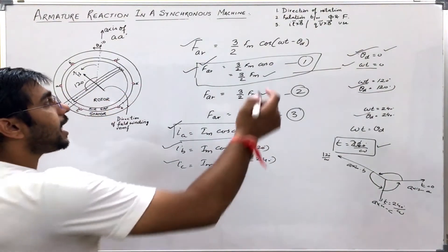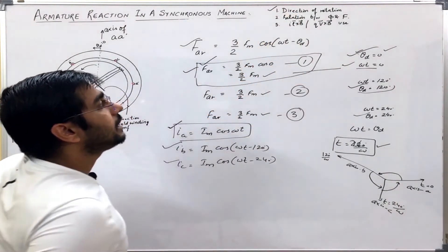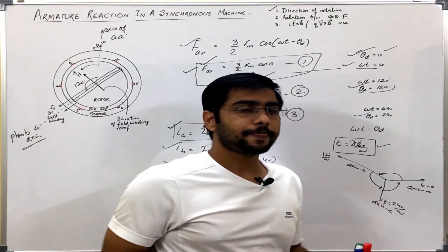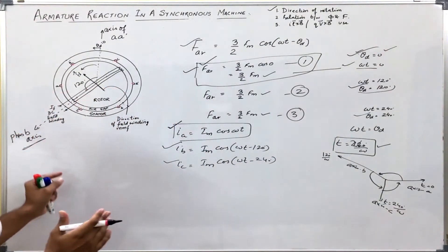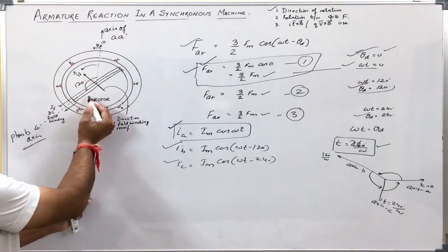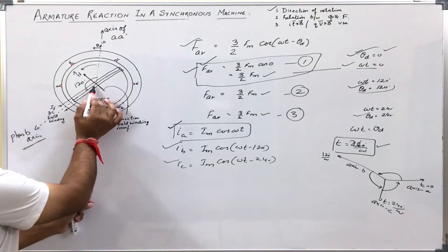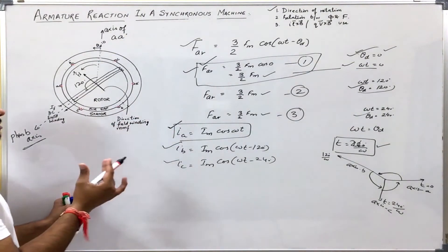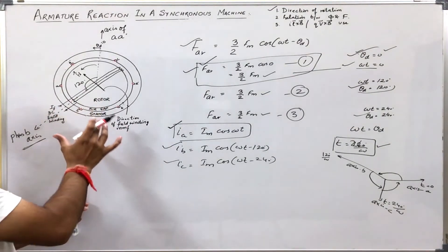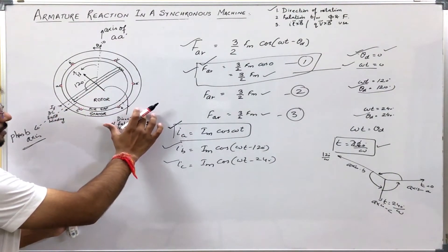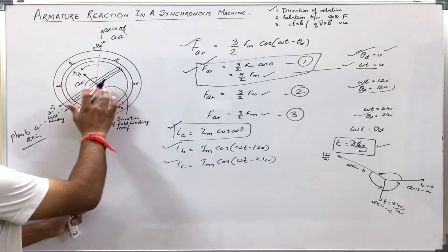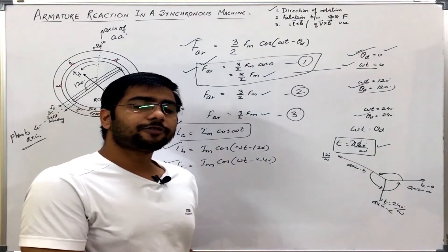In this way I have cleared this doubt about the direction of rotation of the MMF. Now there is one more thing. In this diagram I have shown that the axis of phase a is here, axis of phase b is here, and axis of phase c is here. What if I change the position of b and c such that the axis of phase b comes in the opposite direction and the axis of phase c comes in the other direction? Then what will be the direction of rotation?